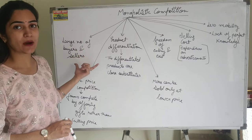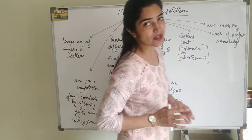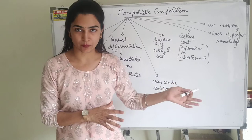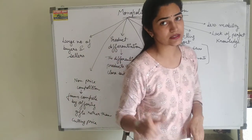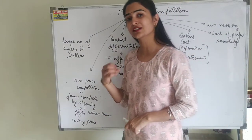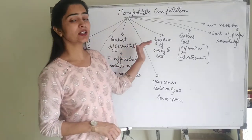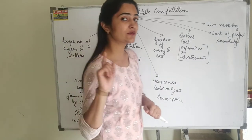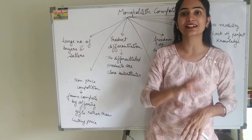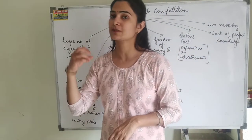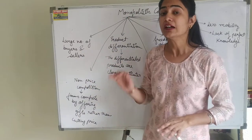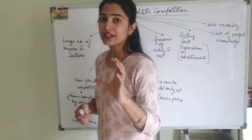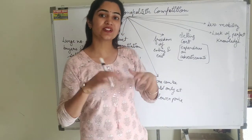In monopolistic competition, there are large number of buyers and sellers. Moving ahead to the next feature — it involves product differentiation. In perfect competition, there were homogeneous products, meaning all products were exactly the same in respect to shape, size, and price. But in monopolistic competition, there is product differentiation — the product line is the same but with certain differentiation.